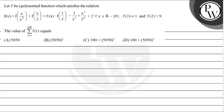Hello Bachchon! Let's read the question. Let f be a polynomial function which satisfies the relation that f(x) + f(x/y)² + f(x/y) is equal to f(x) multiplied by f(1/y) minus 1/y³ + x³/y⁶ + 2, for all x belonging to the set of real numbers except 0.